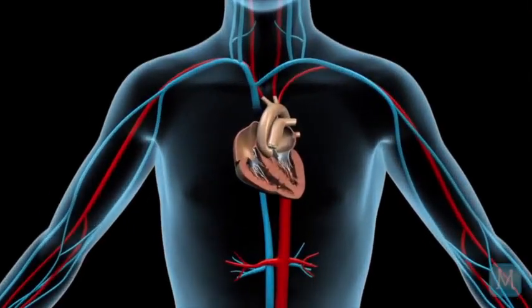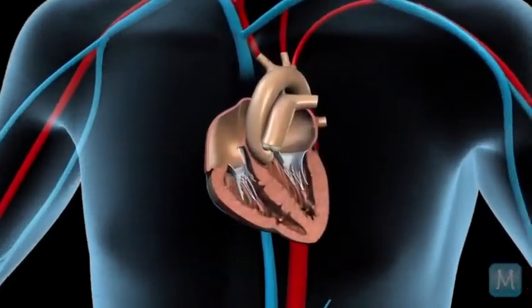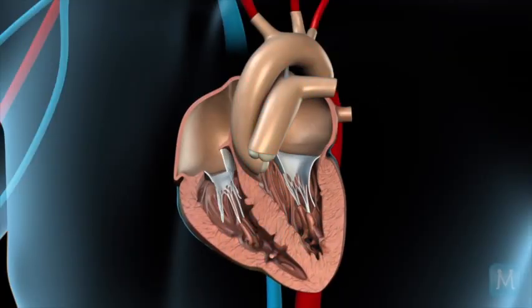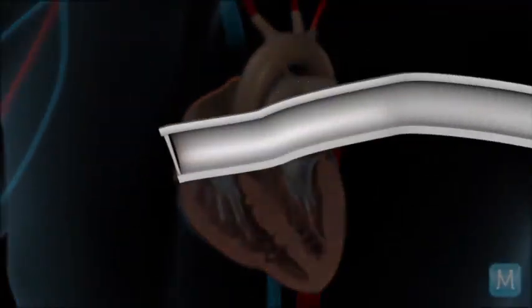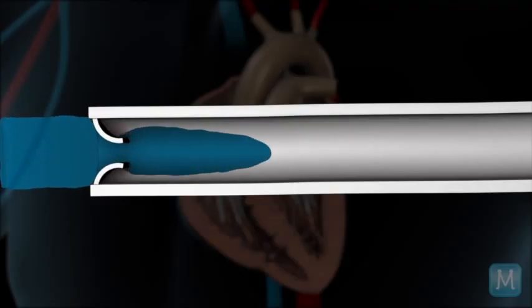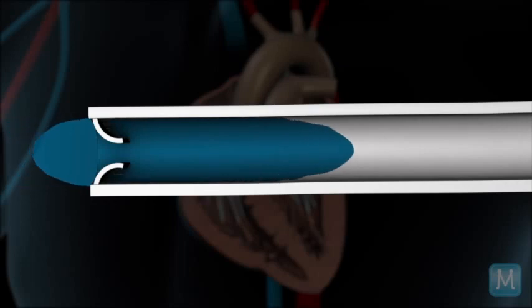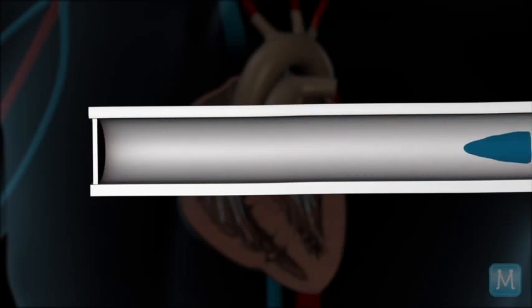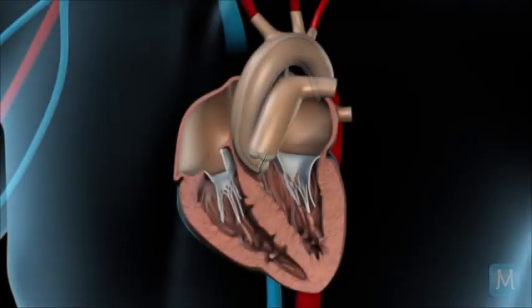All the valves in the heart act as one-way valves. They open to allow blood to go in the forward direction and they close so blood doesn't come back where it came from. I use an analogy — it's a bit like the Panama Canal and its locks. The locks open to allow water and the boat to go forward, and then the lock closes behind it so the boat doesn't go backward. The valves act fairly similarly within the heart.